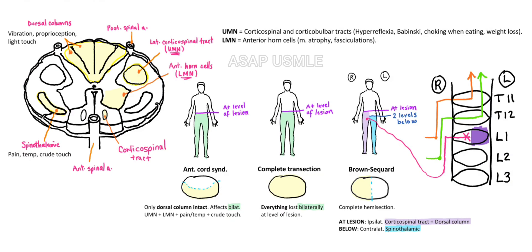Now let's review the symptoms of upper motor neurons and lower motor neurons. To keep it simple, I like to think of upper motor neuron symptoms as going up and about: hyperreflexia, the toes going up in positive Babinski, standing up when you're choking, and weight loss from lifting weights — just to think of the gym. Similarly, think of lower motor neuron symptoms as passive: muscle atrophy, because you're not moving and your muscles are wasting, and fasciculations, which are small and non-purposeful movements.